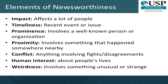The third element, prominence, refers to recognizable individuals or entities such as the prime minister or an institution like USP, which is well known throughout the Pacific region. Proximity means that to be newsworthy an event has to happen somewhere nearby. Human interest deals with people and how they live their lives. Conflict is anything involving fights or disagreements. The final element, weirdness, involves anything unusual or strange.